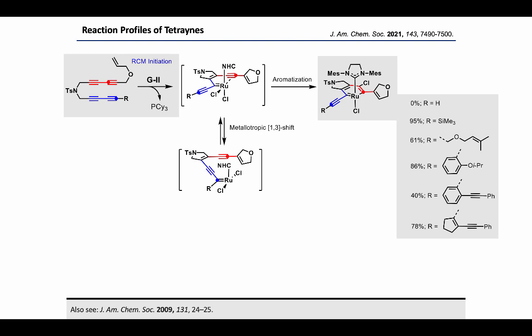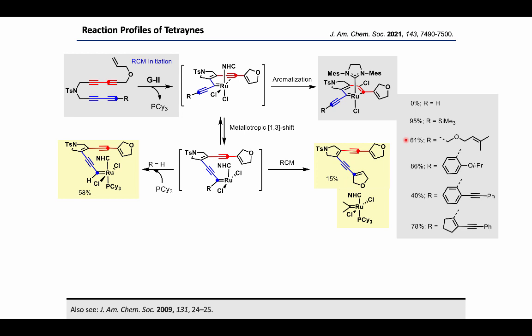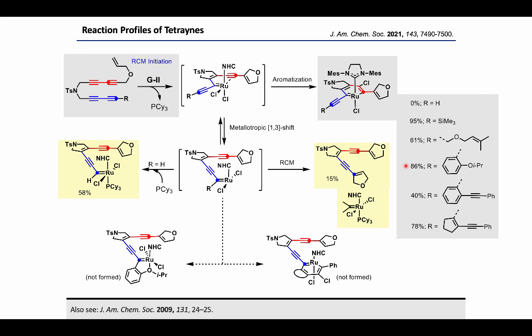When R is hydrogen, there is complete metallotropic shift leading to the formation of the corresponding complex in 58% yield. When a trimethylsilyl substituent is present, the metallotropic shift can be completely prevented and the corresponding ruthenobenzene is formed in excellent yield. When a benzyloxymethyl substituent is present, the ruthenobenzene is formed as the major product, with a minor metathesis byproduct. When a 2-isopropoxyphenyl substituent is present, ruthenobenzene is formed as the exclusive product without formation of the oxygen chelate — the equilibrium may be driven toward the ruthenobenzene due to its greater thermodynamic stability. When tetraines with an additional indiyne functionality are used, ruthenobenzene is formed before metallotropic shift, with no detection of ruthenobenzene after the metallotropic shift.